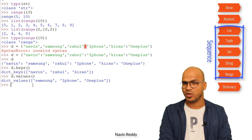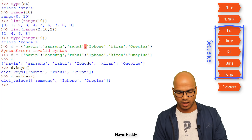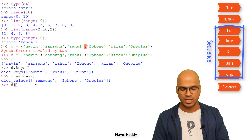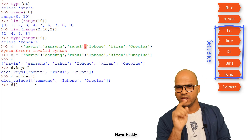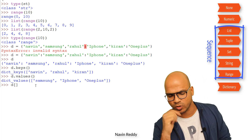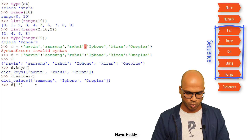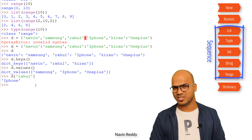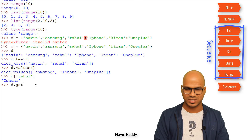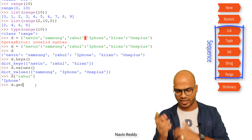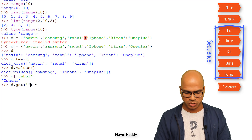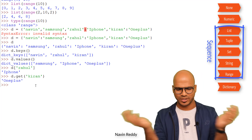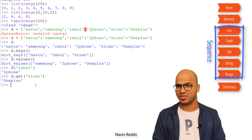To get a particular value — say I want iPhone — I use the key Rahul: D['Rahul'] and we get iPhone. We can also use the get method: D.get('Kiran') gives OnePlus. You can use square brackets or the get method — everything works. That's how you work with dictionaries.